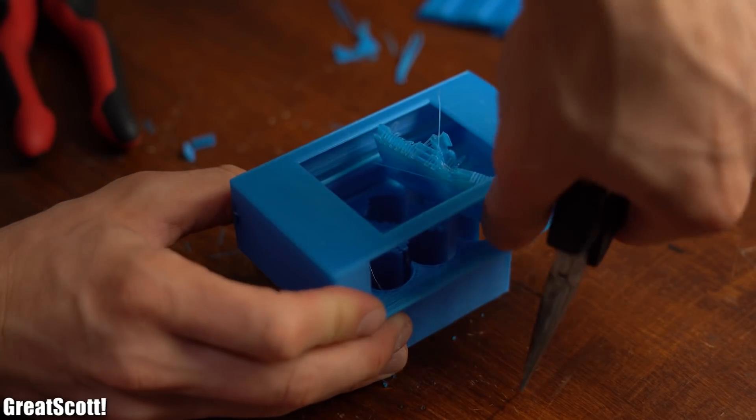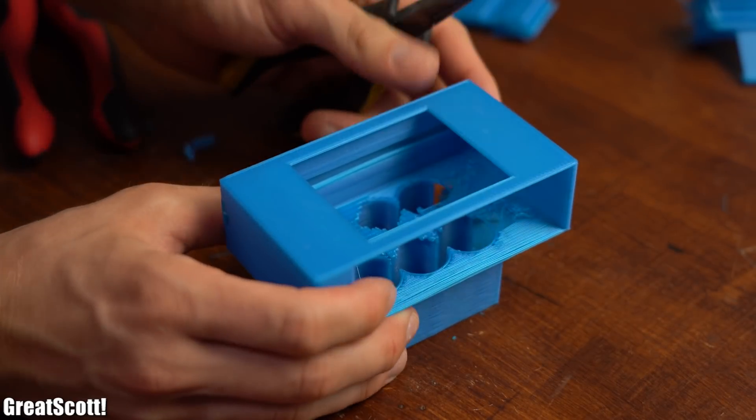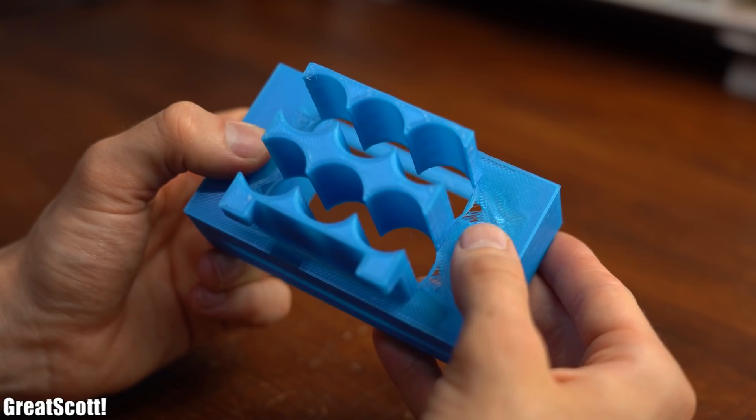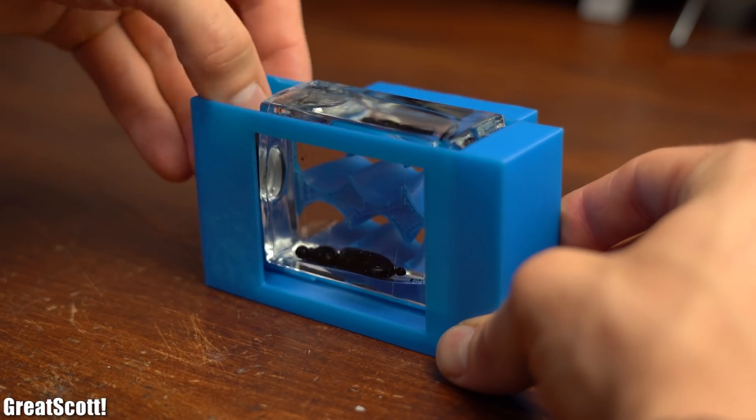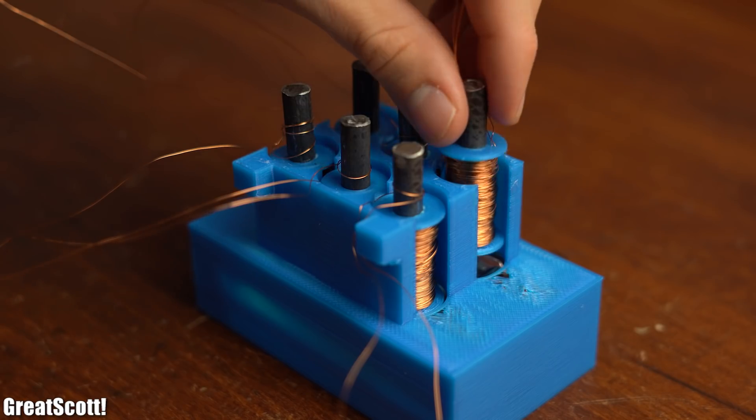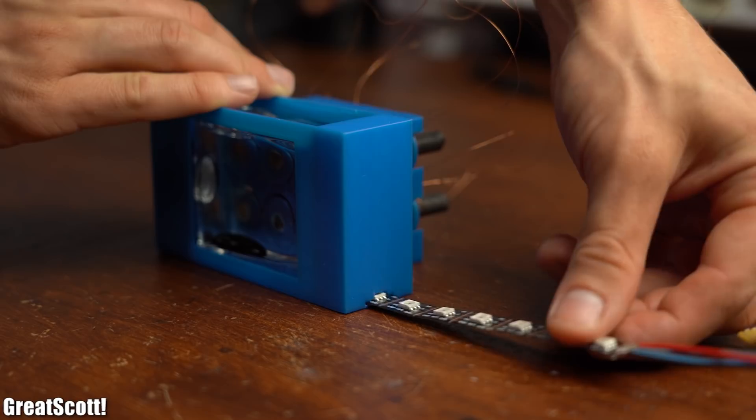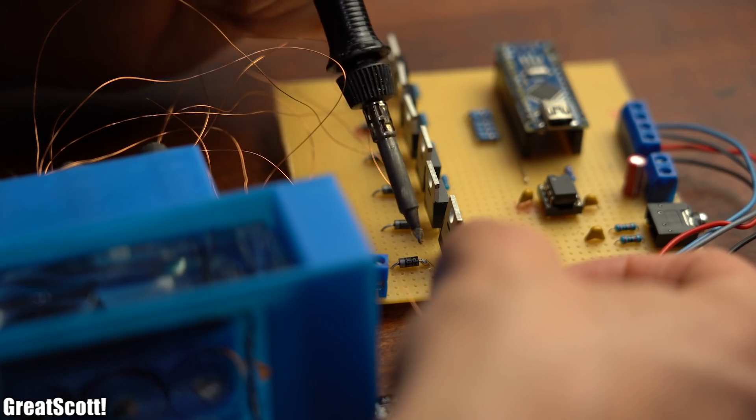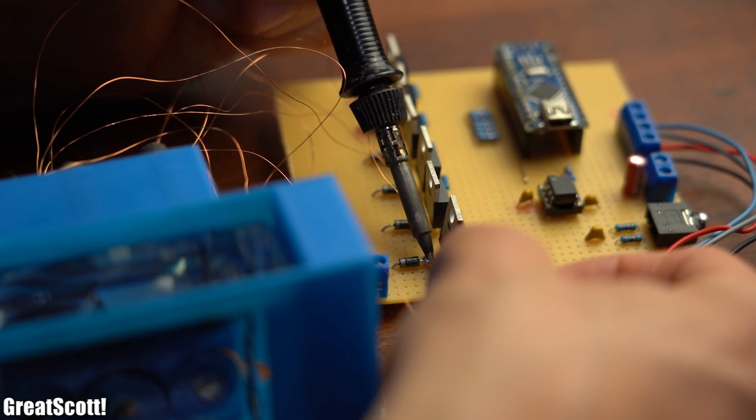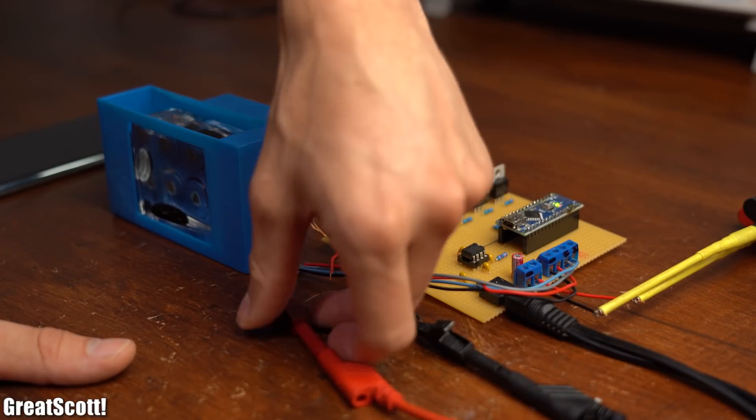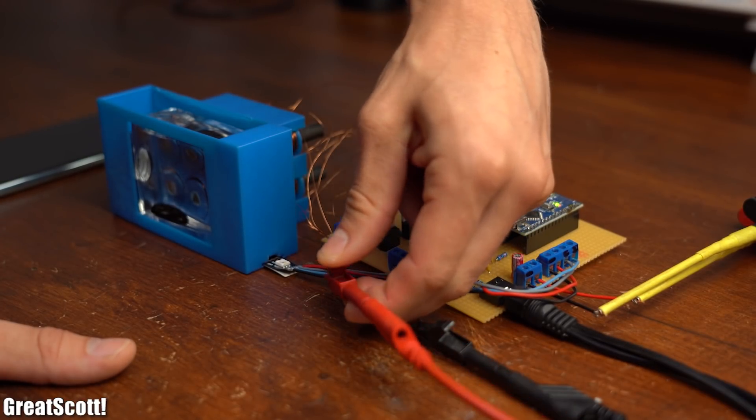But nevertheless after removing the existing supports the enclosure may not look very appealing but it surely does its job. So after placing all of the components in its rightful place and connecting the electromagnets to the circuit, it was finally time for a first proper test with the function generator.